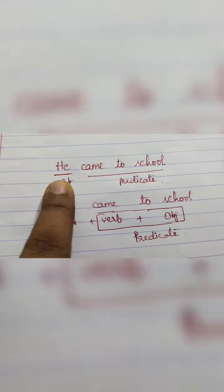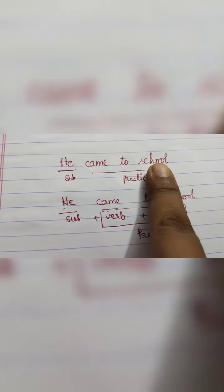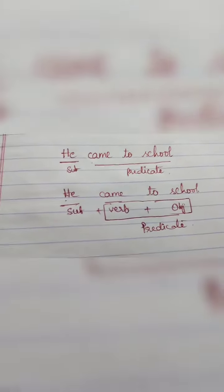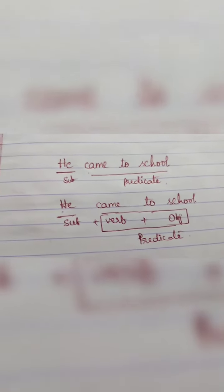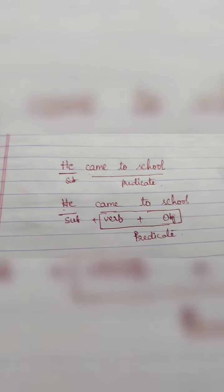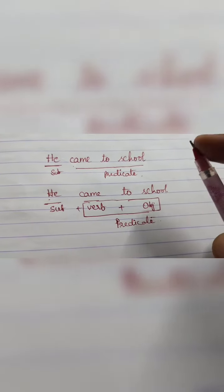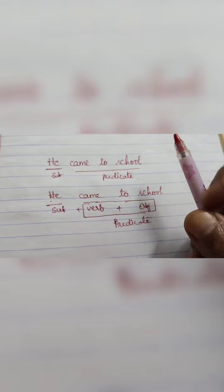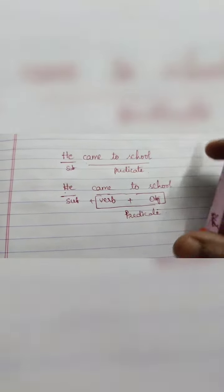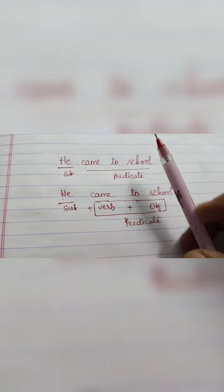The remaining part is called predicate. I can simply explain with a pen easily. So let us assume that this pen tip is the subject and the remaining part is the predicate.